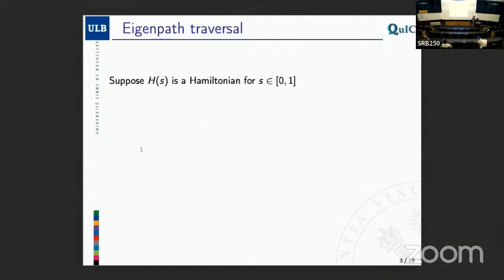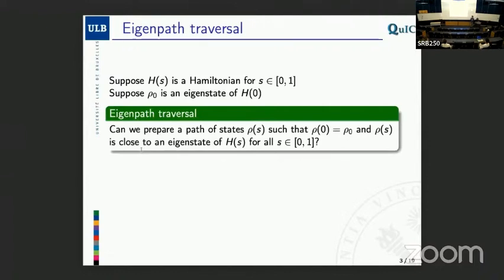So what's the basic setup? Suppose you have a path of Hamiltonians. You have a parameter going from 0 to 1, and for each value of that parameter you have a Hamiltonian. Suppose you start in a state that is an eigenstate of the starting Hamiltonian. Then the question is: can we track the corresponding eigenstate as the Hamiltonian changes along the path? For all values of the parameter, can you modify the state that you started with such that you stay close to an eigenstate of the Hamiltonian at each point along the path?